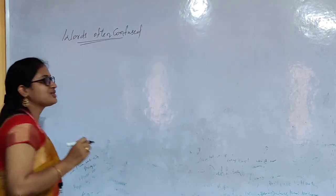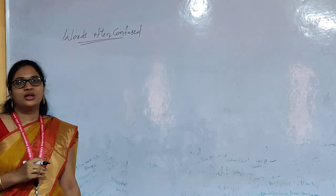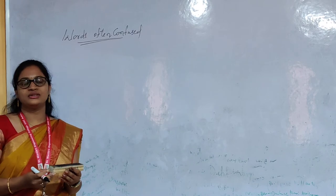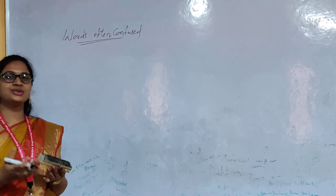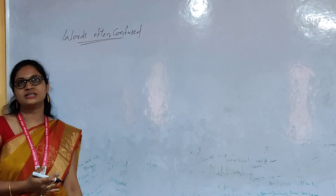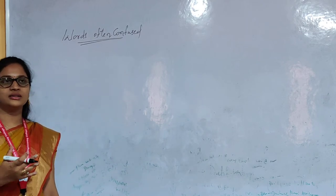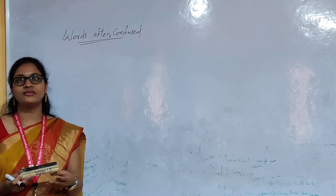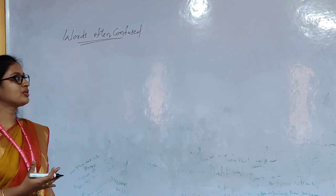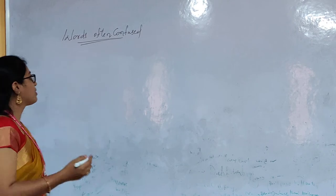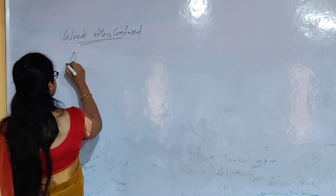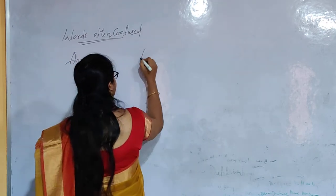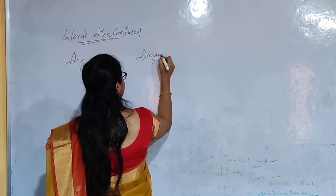So in the English language, we have a lot of confusing words. We generally confuse with all the words since we are non-native speakers. So we will see some of the few words about all the confusing things. So first one is 'any way' and 'anyway'.